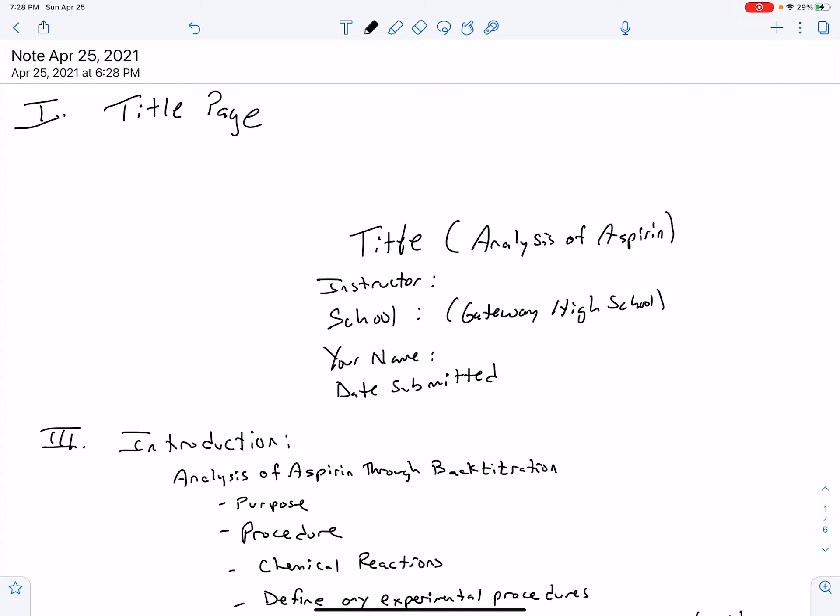This video is for the analysis of aspirin formal lab report for AP Chemistry. I want to go through some of the things that need to show up in your report, show you some sample calculations, and hopefully once we finish, you'll have a better idea of how to do this lab. If you do have questions afterwards, be sure to contact me and I can help you with your individual results.